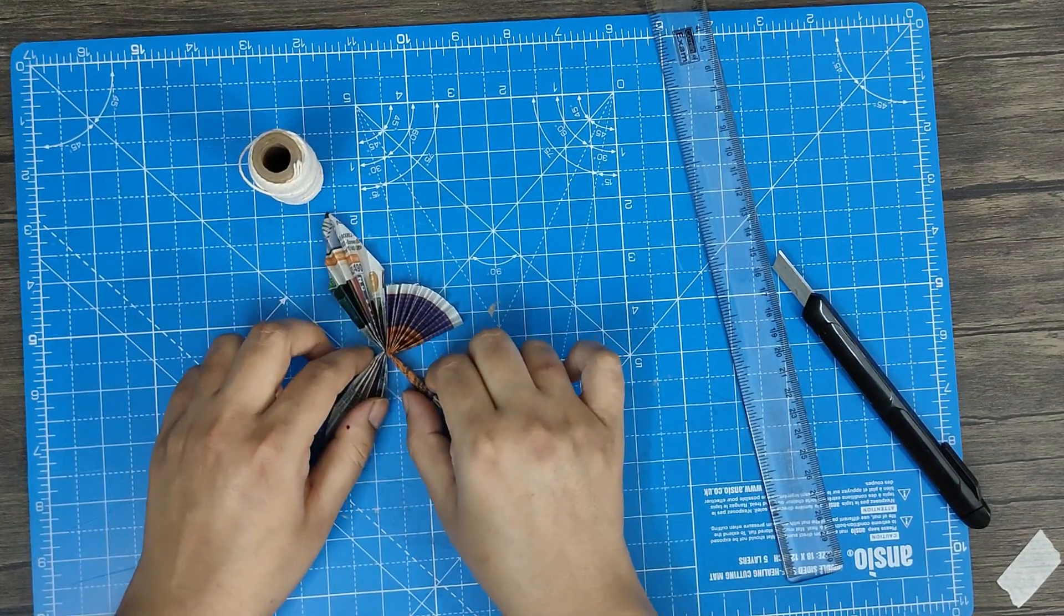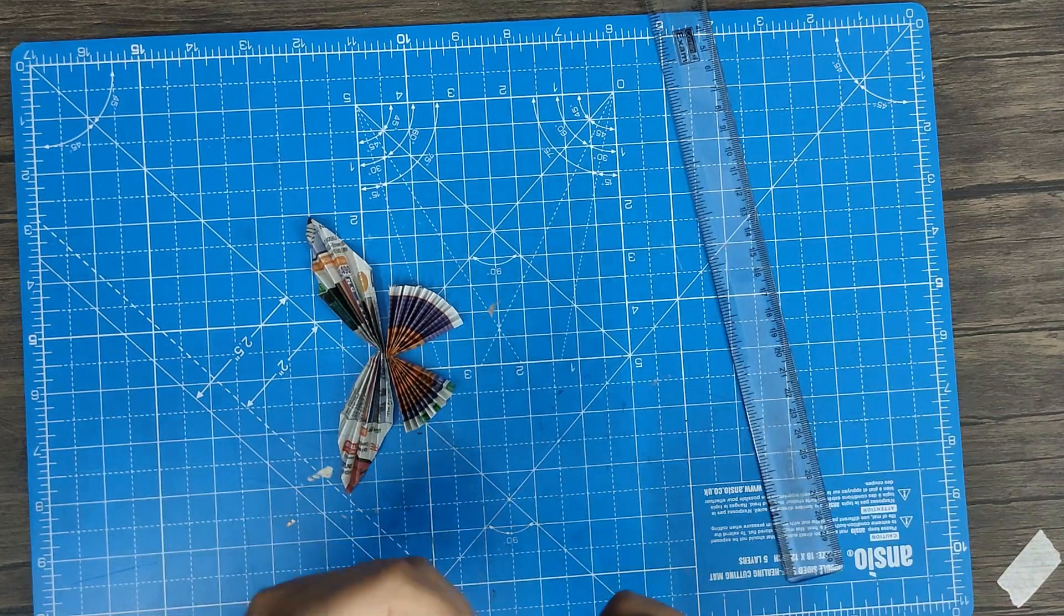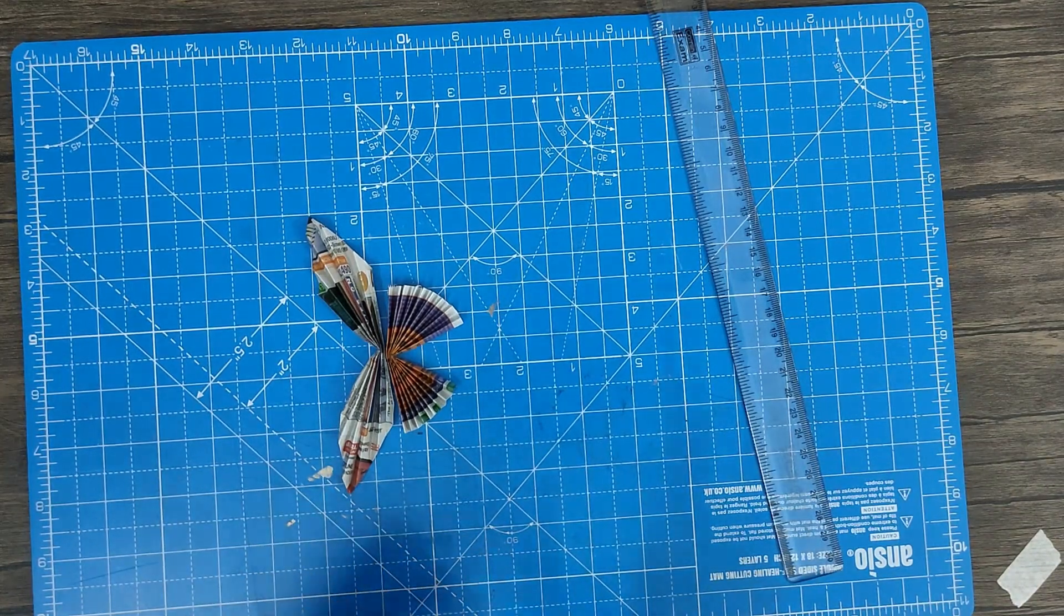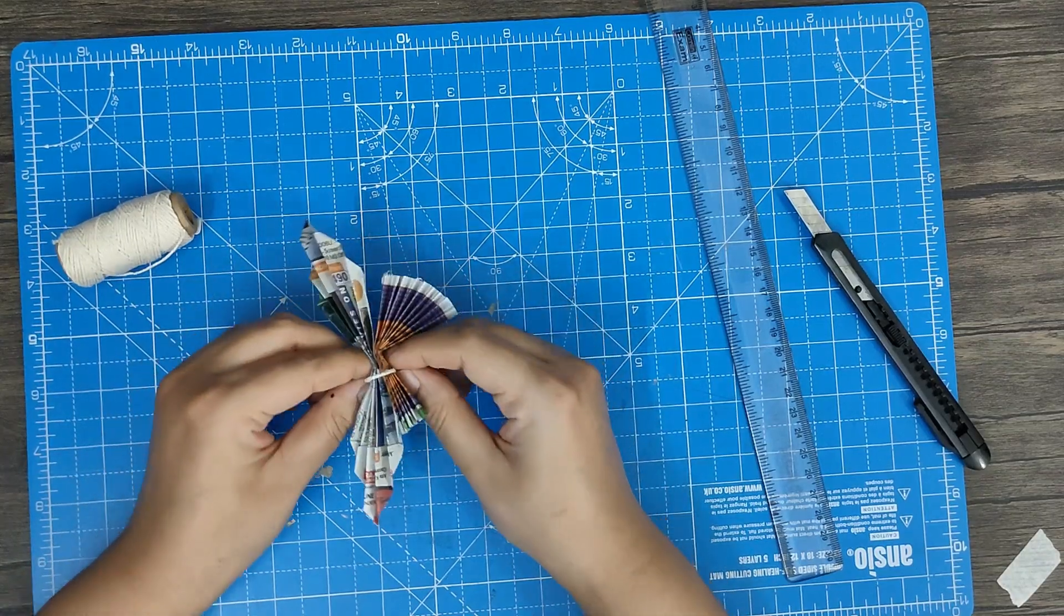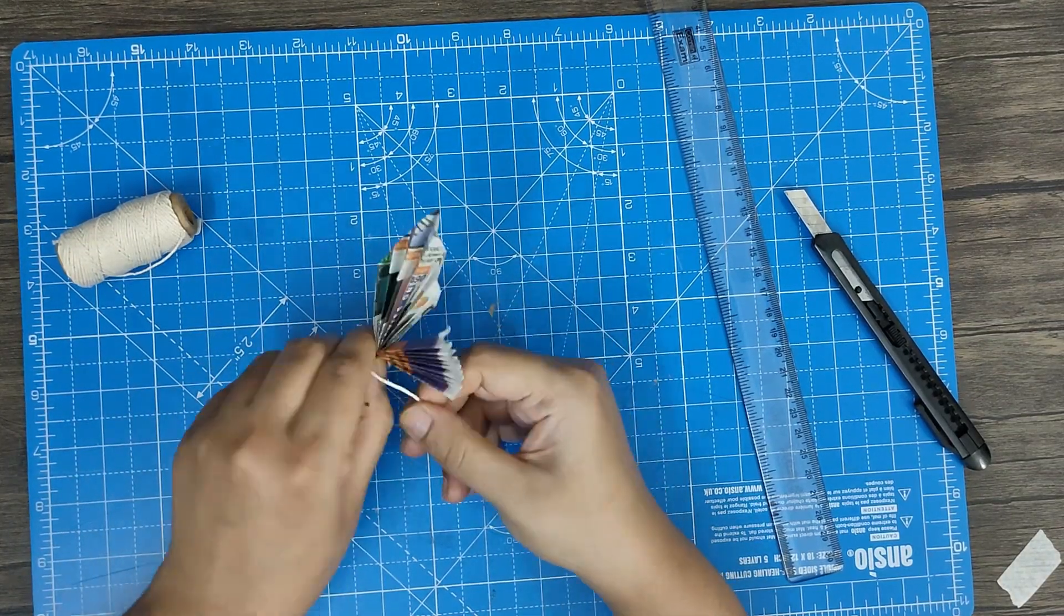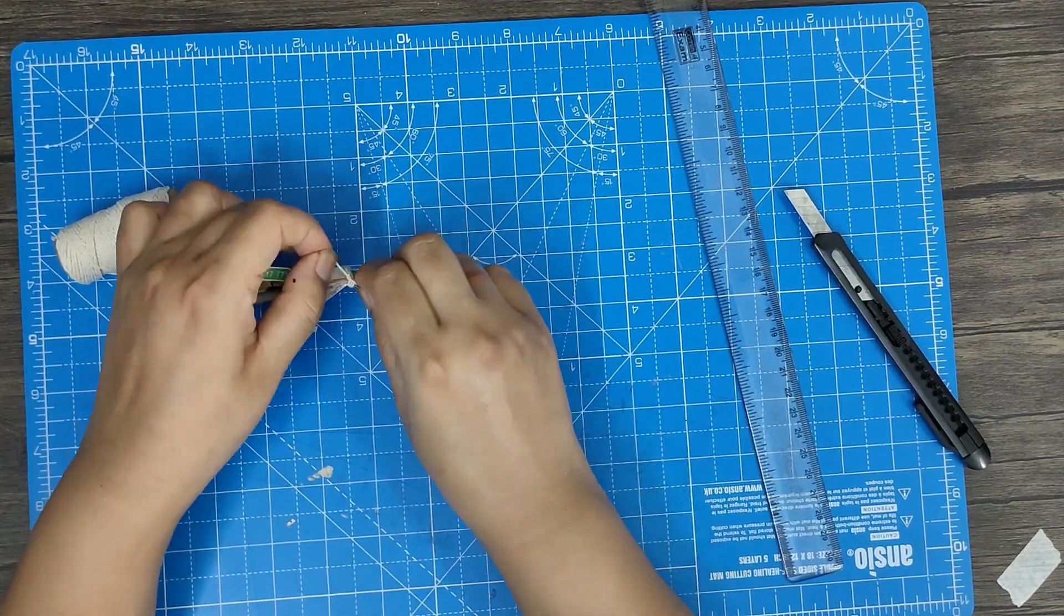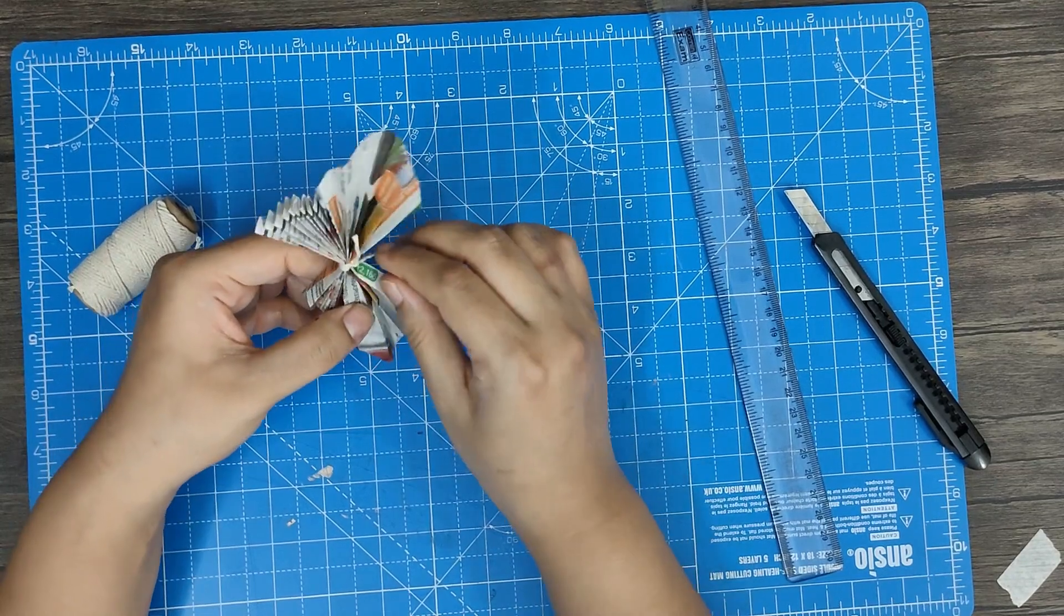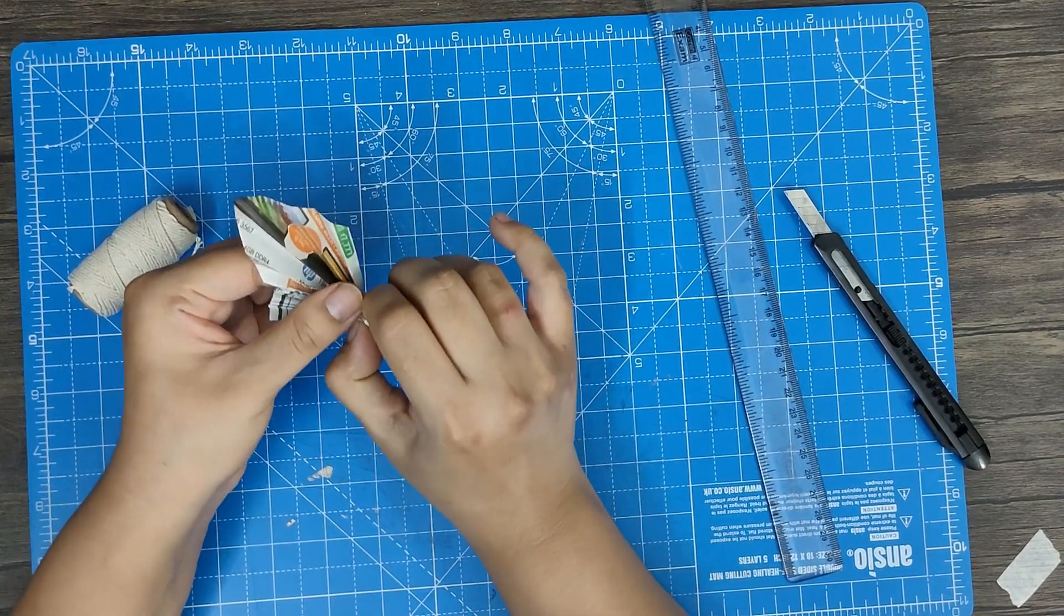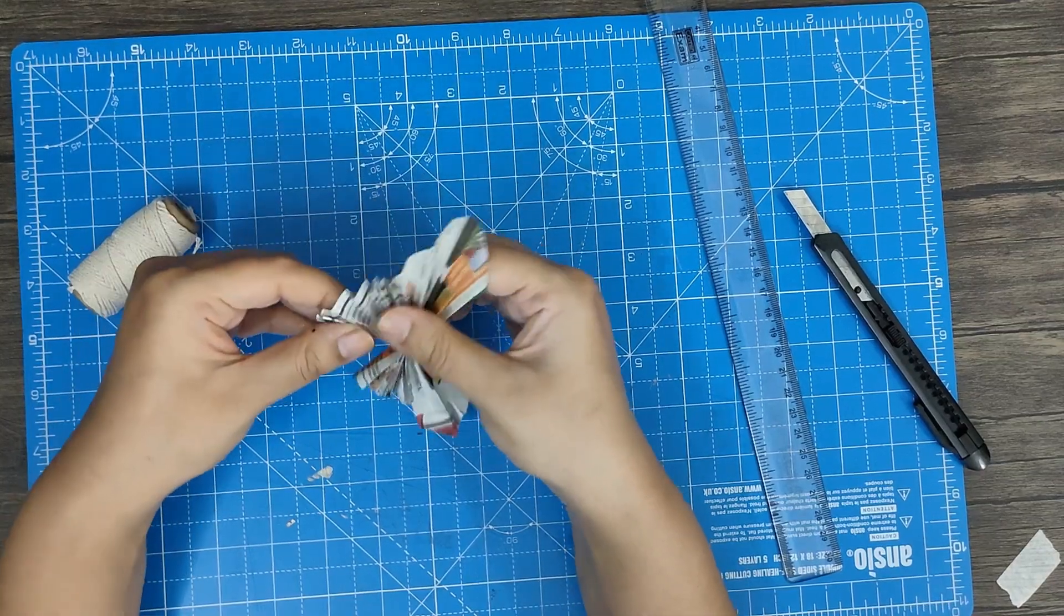Now take these two parts and cut a little thread and tie these two together. And here you go, your butterfly is ready. Just open it up.